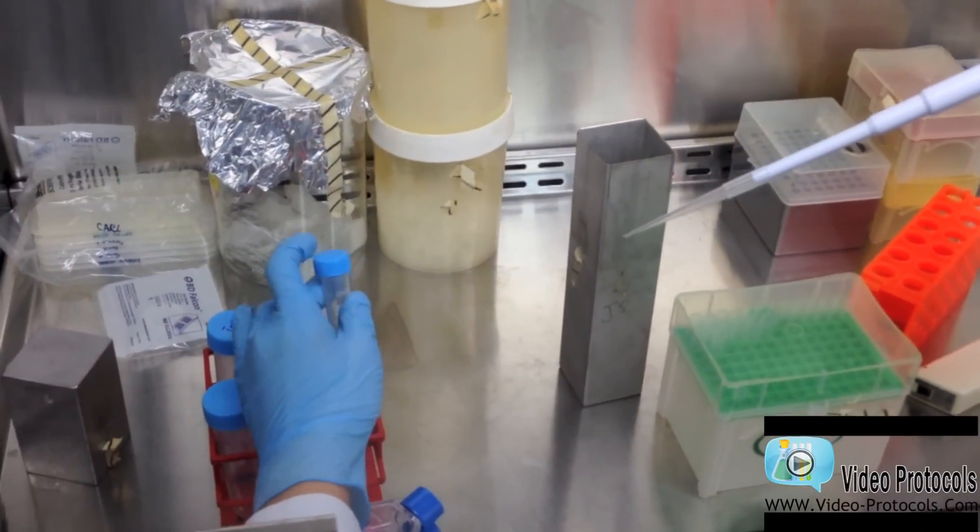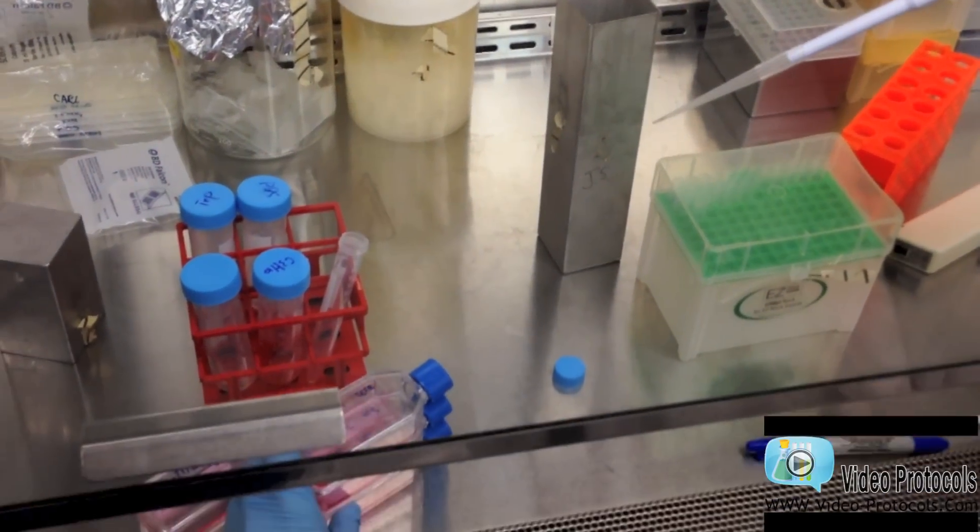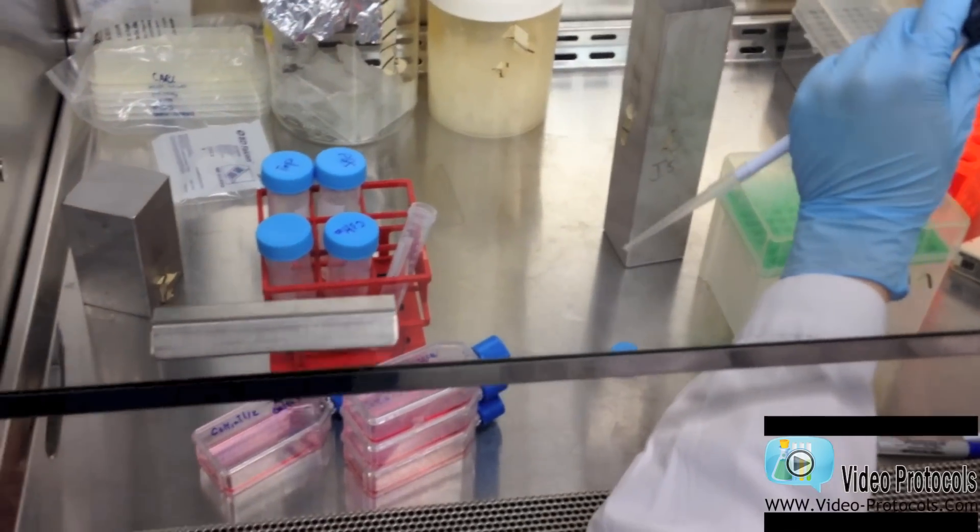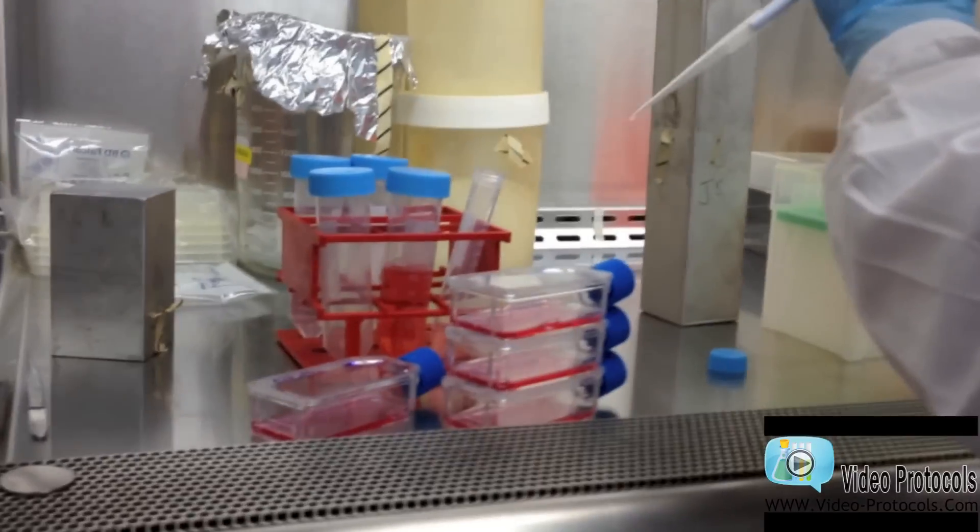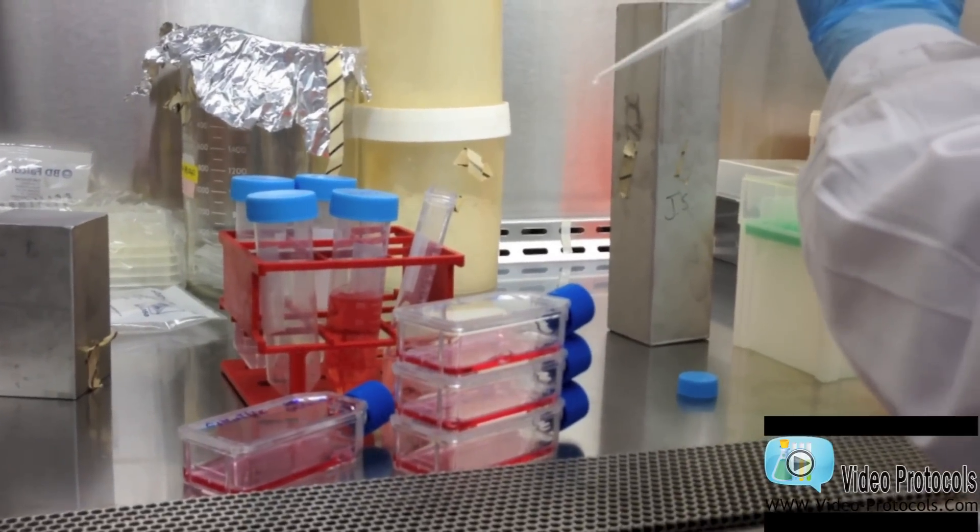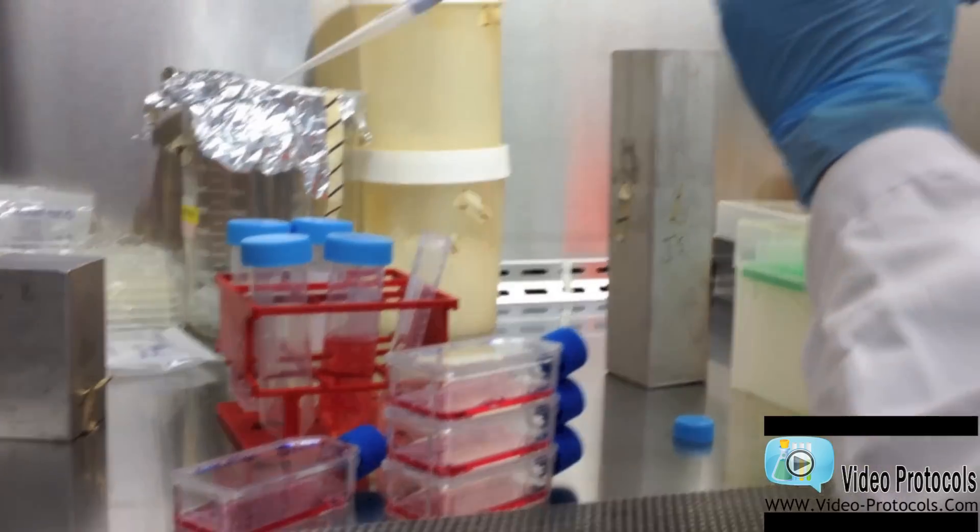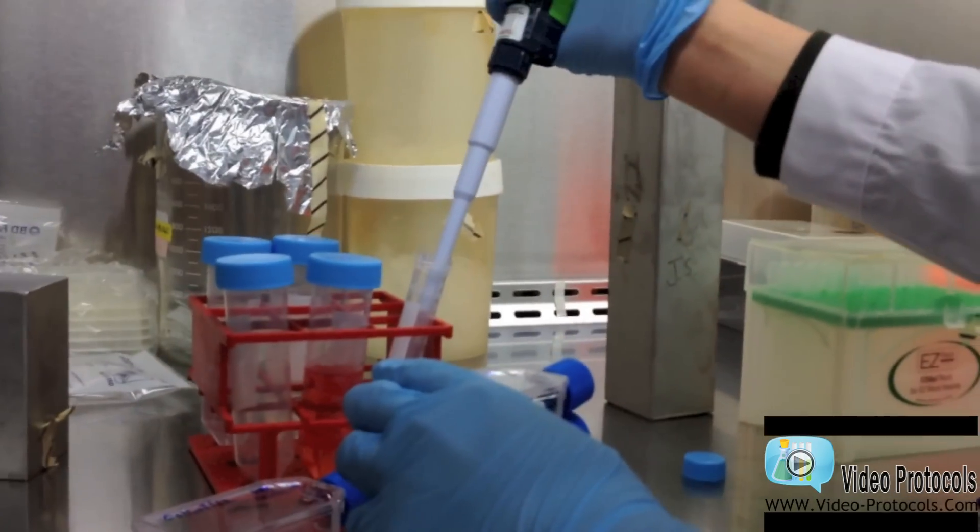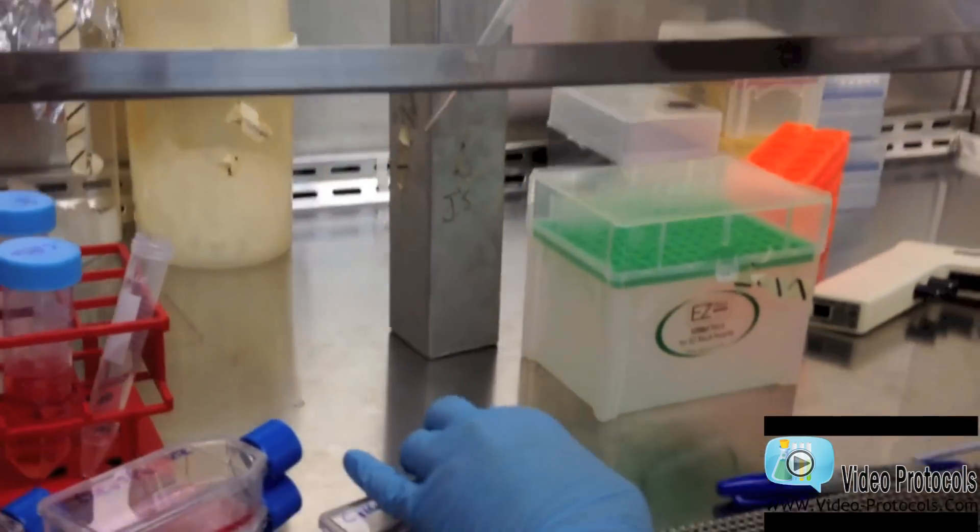This is my stock. I can then decide, for example, for these 3 flasks I would like to subculture at 1 to 4. And then use 250 microliters of cell suspension for each flask.